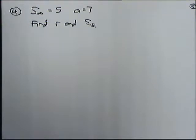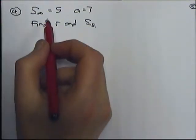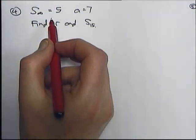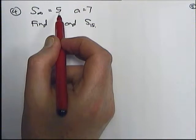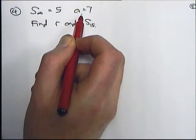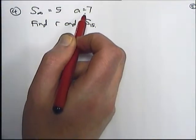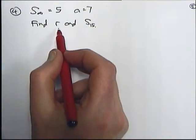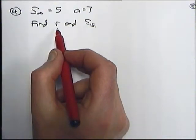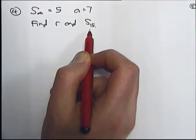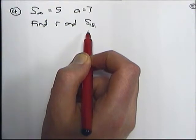In this question, we're told the sum to infinity of a geometric series is 5, and the first term is 7. We've been asked to find the common ratio, which we denote as r, and the sum of the first 15 terms.